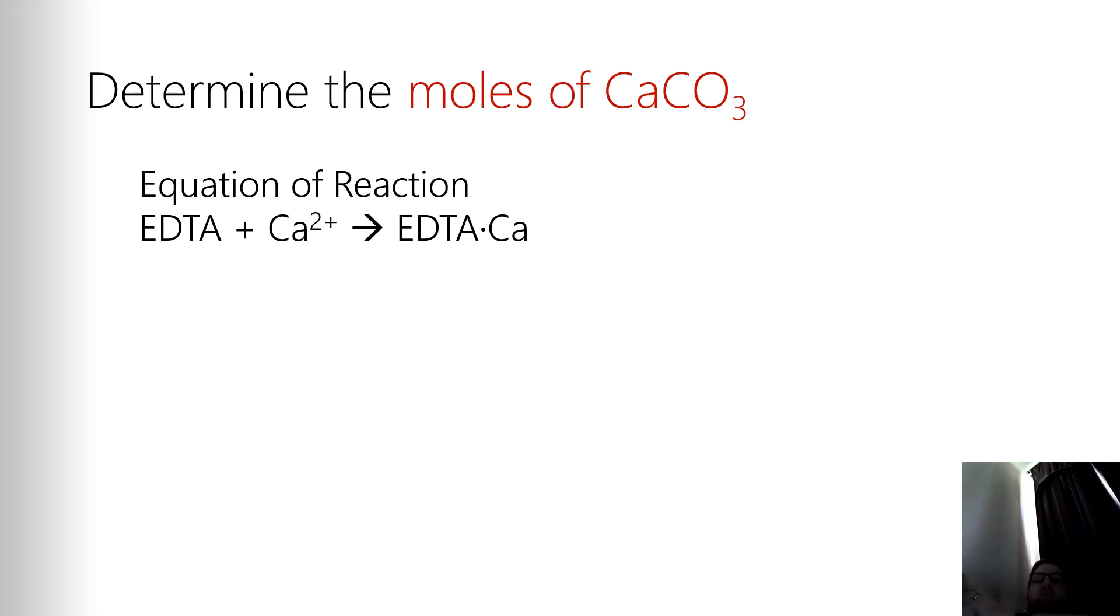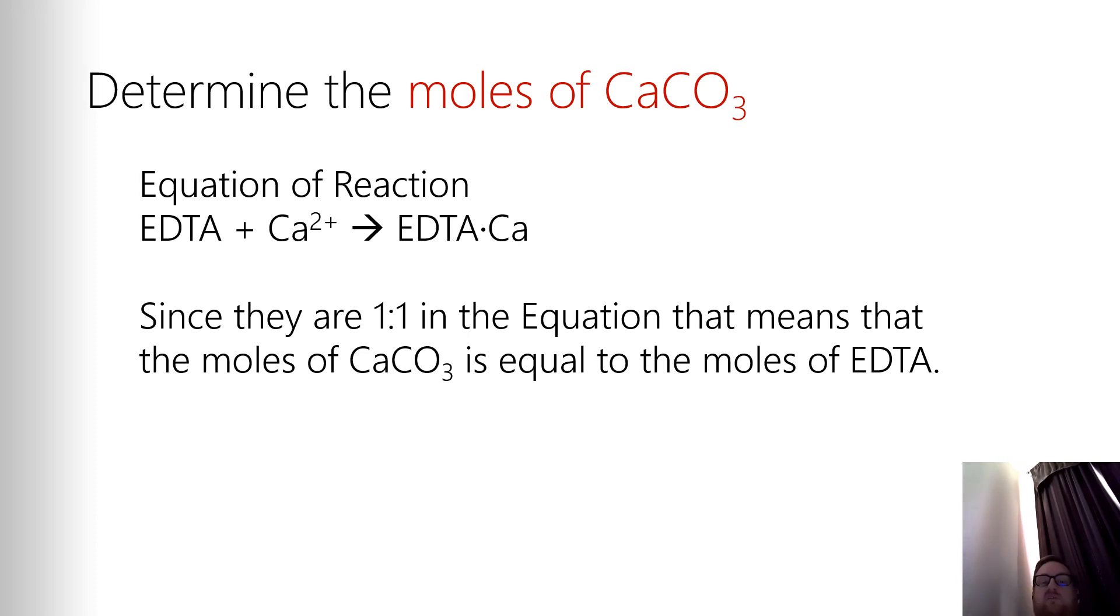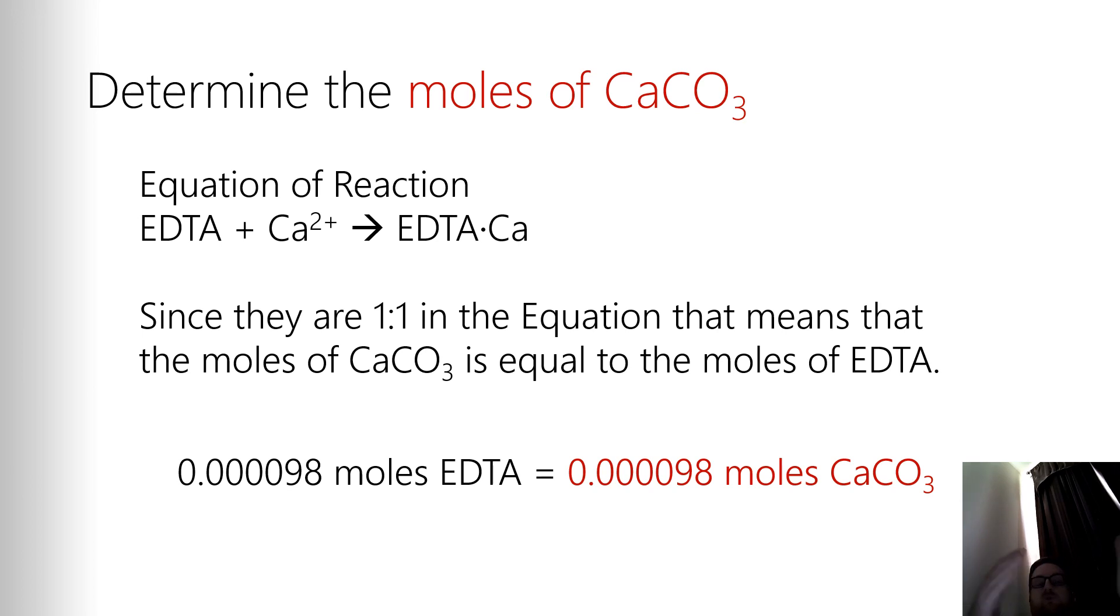The calcium ion on its own causes the indicator to be one color, that kind of purpley color. And then when it's bound in EDTA, the color of the system turns to blue. So it's a one-to-one relationship between these two. So since I know it's a one-to-one relationship, I know that if I had 0.000098 moles of EDTA, that means I also have 0.000098 moles of calcium carbonate in the system because I had to use the exact amount of EDTA necessary to eliminate all the calcium.